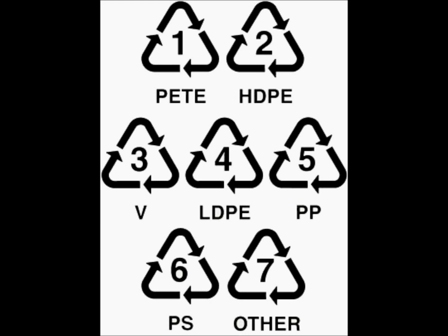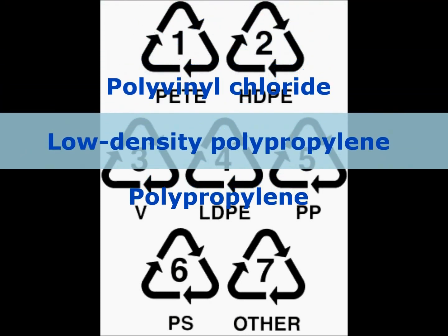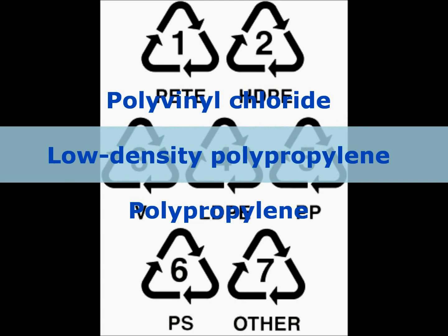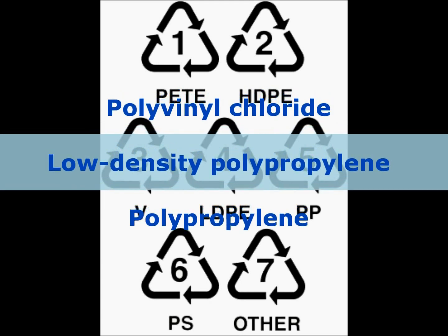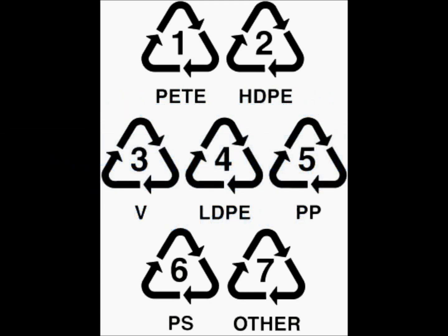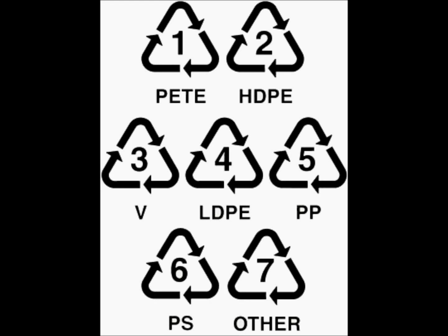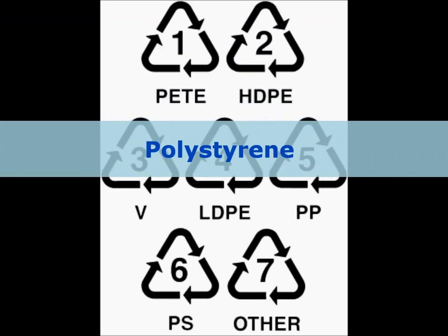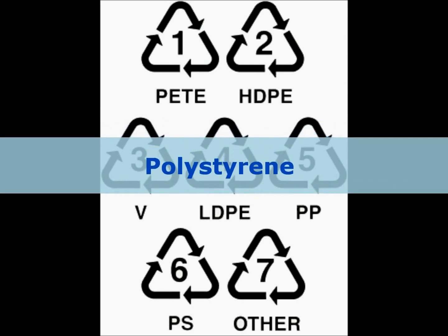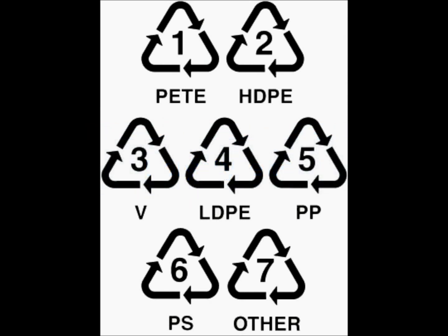Numbers 3, 4, and 5 — polyvinyl chloride, low-density polyethylene, and polypropylene — are quite difficult to recycle or have some toxic by-products. These plastics can be found in vinyl records, microwavable containers, and squeezable bottles. Polystyrene is number 6. Although this is becoming easier to recycle, its weight-to-volume ratio makes it difficult to justify due to the space it would take up in the recycling trucks. This plastic can commonly be found in egg cartons and disposable cups.